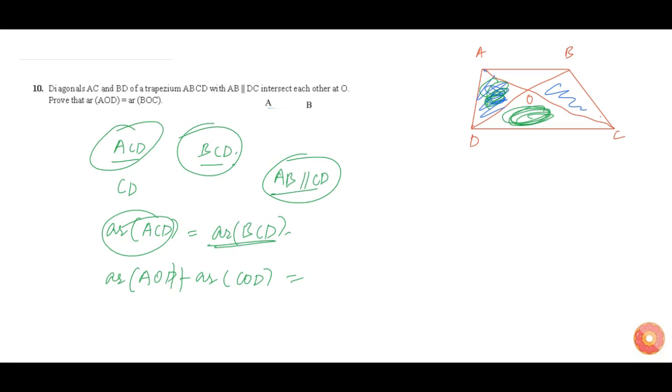Area of triangle COD gets cancelled, which means area of triangle AOD is equal to area of triangle BOC. This is what we need to prove in this question. Hence proved.